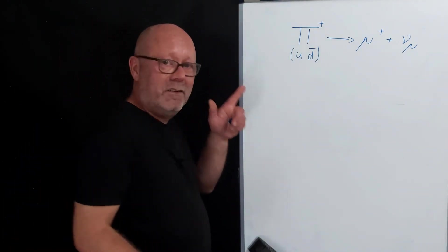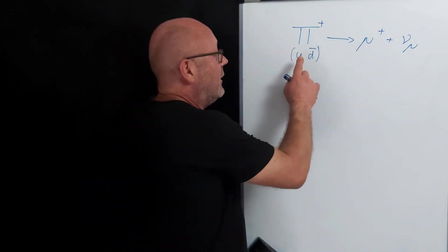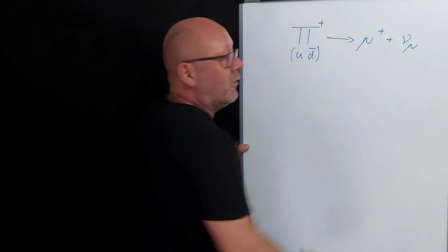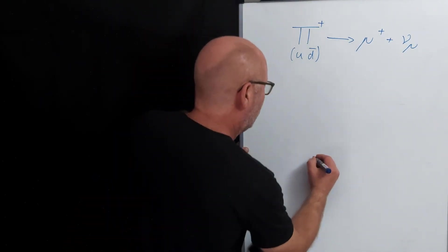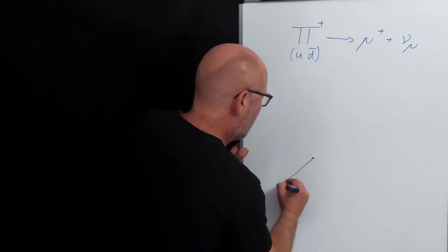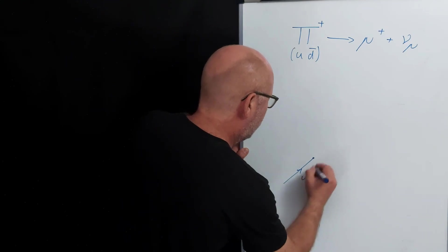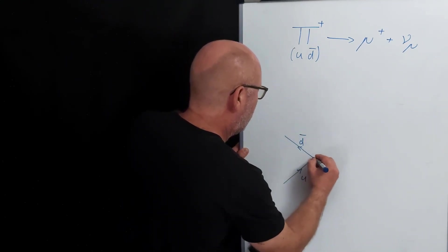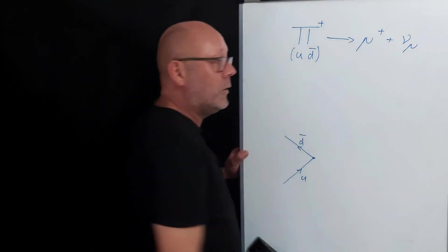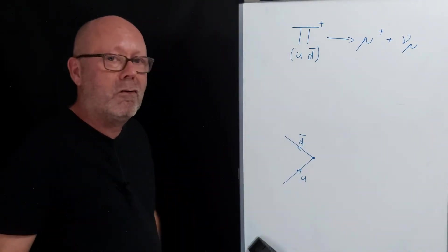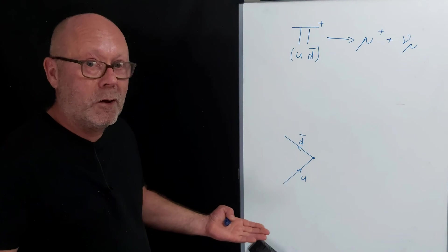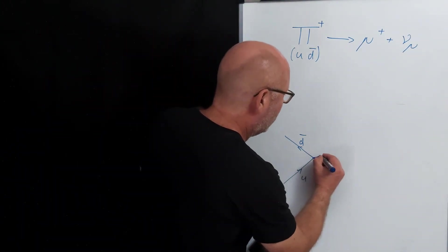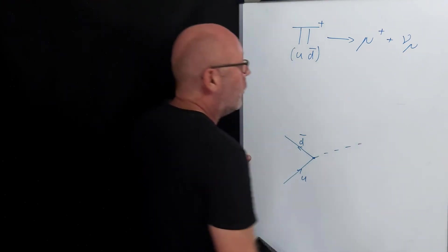So now actually, we can see that what is going on is the up and the anti-down that react together to give you this. So we can start to draw the first vertex. We have the up and the anti-down. We see these are leptons, so it's not going to be the strong force. The strong force does not affect leptons. So it has to be the weak force. It will be a W or Z boson.